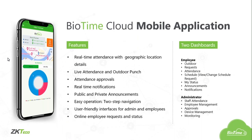Now we will talk about the Biotime Cloud mobile application. The only difference is you will be using Biotime Cloud through a mobile application, which is easier to use and more accessible for the employee or administrator. We have similar features but in a mobile application, and we also have two dashboards. Features include real-time attendance with geographic location details, live attendance and outdoor punch, and attendance approvals. For the employee, you can see outdoor requests, attendance, schedule, my status, and announcement notifications. For the administrator, he can see staff attendance, employee management, approvals, device management, and monitoring.